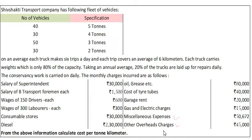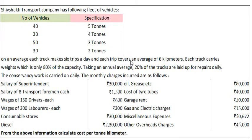With this understanding, first of all we will calculate monthly ton kilometres. In this particular sum, monthly kilometres are not required because no expenditure is based on monthly kilometres — for example, diesel, oil, depreciation, repair and maintenance. No such expenses are based on monthly kilometres, as we have seen in previous examples. So here monthly kilometres are not required. We will directly calculate monthly ton kilometres using information on vehicles, specifications, number of trips, distance covered in each trip, capacity utilised, and trucks going for repair.